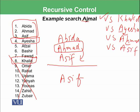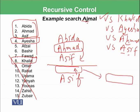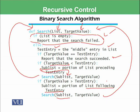Asif is compared with Ajmal: A matches A, but J does not match S because S has a greater ASCII value. This means Ajmal can be found somewhere above Asif. But there is only one element in this list and there is nothing above it. So an empty list is selected and passed to the search function again.